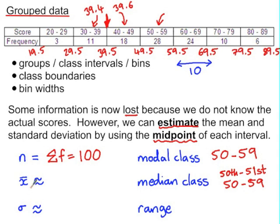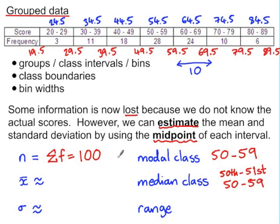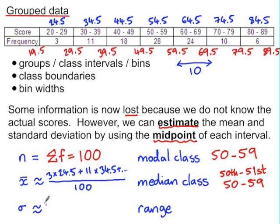To work out the mean we would need to know the original data. But to estimate the mean, we take the midpoint of each interval — that's halfway between 19.5 and 29.5, and so on — and we assume that each of the scores takes that midpoint value. So we have three values of 24.5, eleven values of 34.5, and we calculate the mean based on that, then divide by 100 because we have 100 scores.